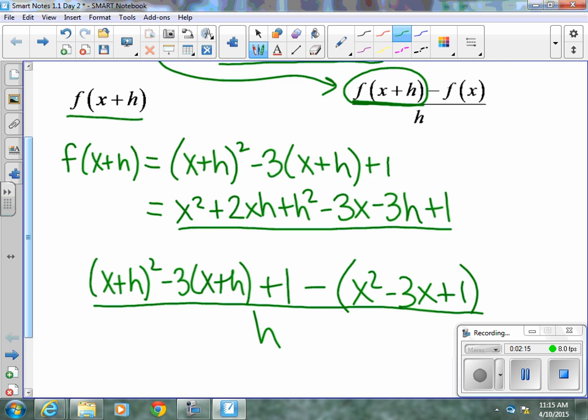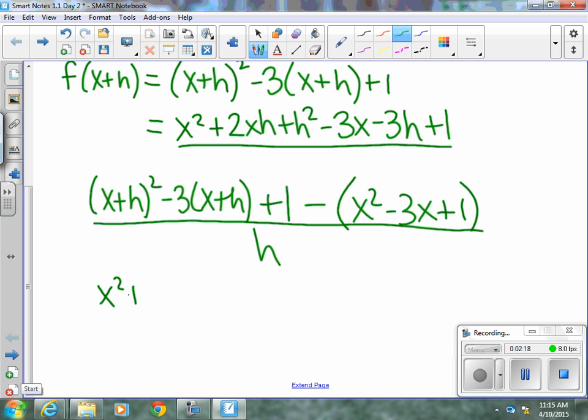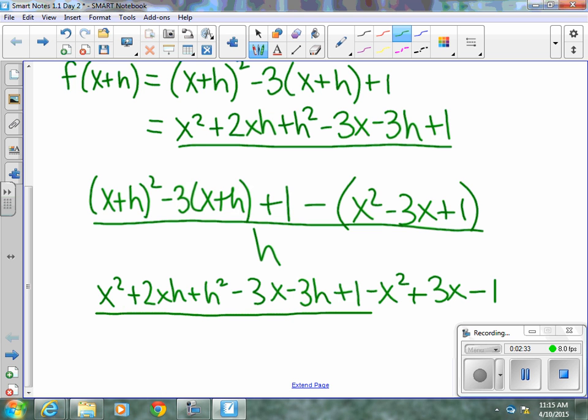So, we can simplify this a little bit. x squared plus 2xh plus h squared when we FOIL. Minus 3x minus 3h plus 1 minus x squared plus 3x minus 1. And that is all still the numerator to our h denominator.